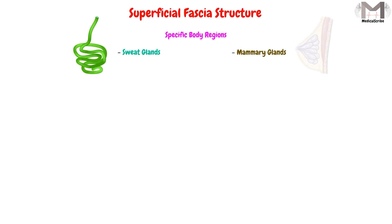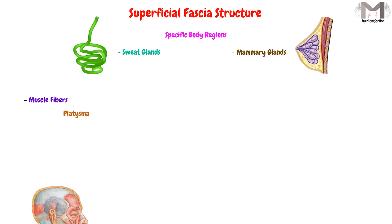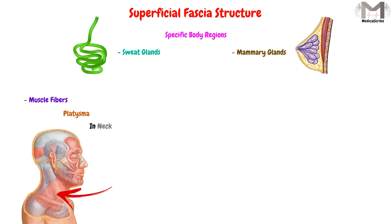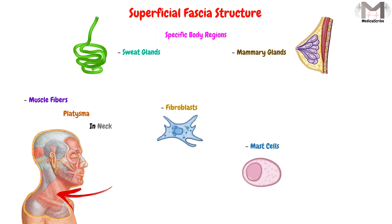Other structures can be found in specific regions of the body, such as sweat glands and mammary glands. We may also find muscle fibers that make up very thin muscles in this fascia, like the platysma muscle in the neck. Additionally, we can find fibroblasts, mast cells, and macrophages.